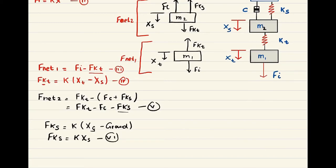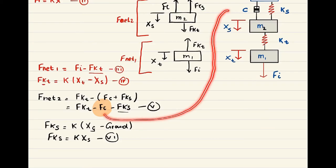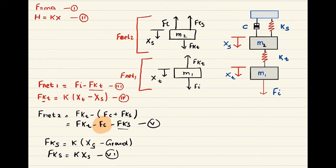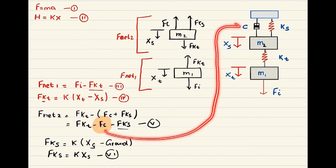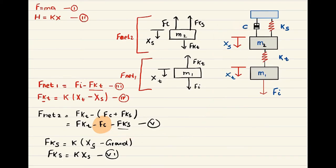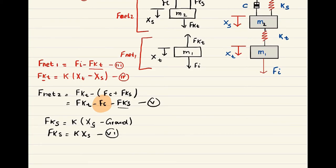The last equation is for Fc — the force produced by the damper connected between M2 and the ground. The damping coefficient is c, and the force produced by a damper is Fc equals c times velocity. This is equation number seven. We are now done with all the equations.